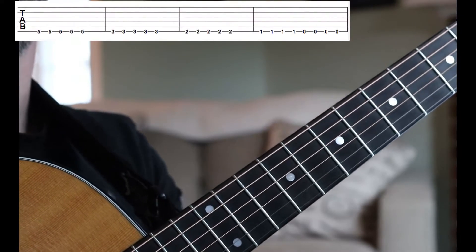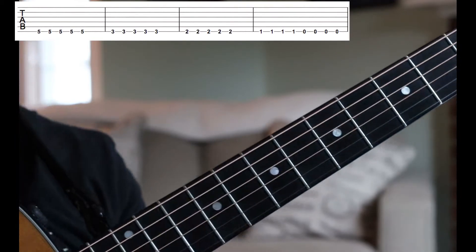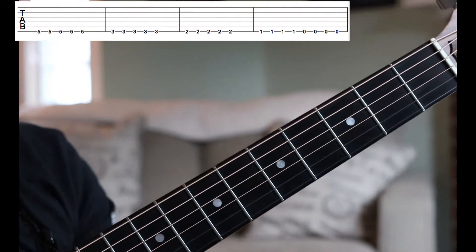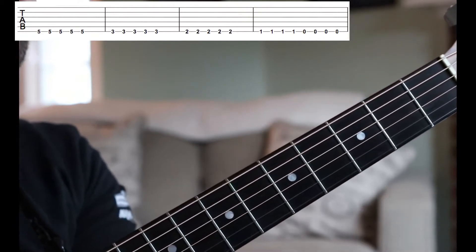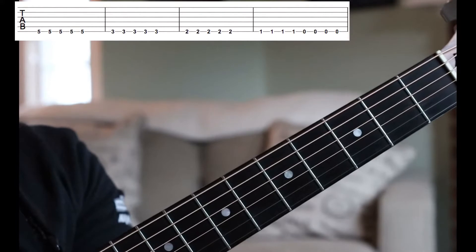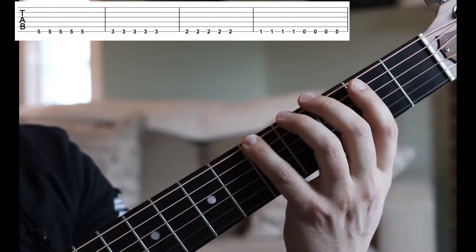So this next tab is another great one. It's 25 or 6 to 4 by the classic band Chicago. So we're going to take a look here. So in this case, you can see from this graphic that we have fives, threes, twos, and ones. So we're going to have to do a little bit of hand position switching.